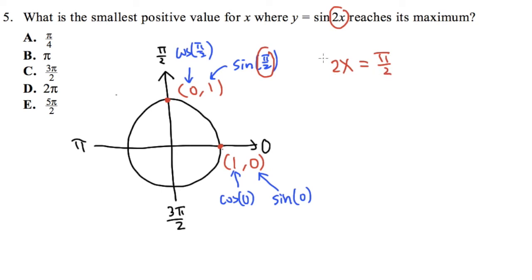To do that, I can just multiply both sides by 1 half. Right? Because 1 half and that 2 will cancel. And we see that x will be pi over 2 times 1 half, which will be pi over 4.